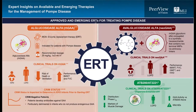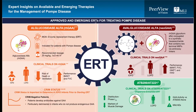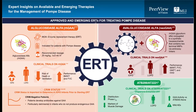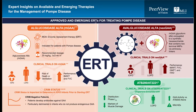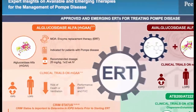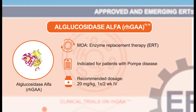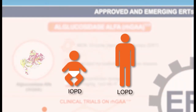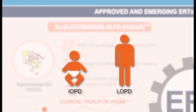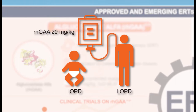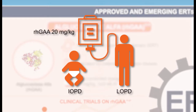There are several treatment modalities for Pompe disease utilizing enzyme replacement therapies — some approved and some emerging. Alglucosidase alfa is approved for treatment of infantile-onset and late-onset Pompe disease. It is a recombinant enzyme, and the recommended dosage is 20 mg per kg once every two weeks, delivered via intravenous infusion.